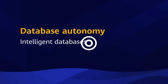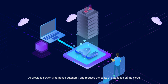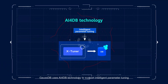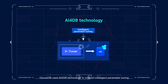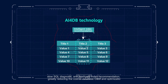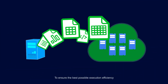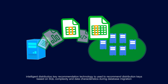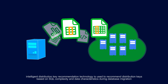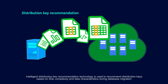Database autonomy — intelligent databases. AI provides powerful database autonomy and reduces the costs of databases on the cloud. GaussDB uses AI-4DB technology to support intelligent parameter tuning, slow SQL diagnosis, and intelligent index recommendation, greatly reducing the cost of database O&M and optimization. Intelligent Distribution Key Recommendation Technology is used to recommend distribution keys based on SQL complexity and data characteristics during database migration.